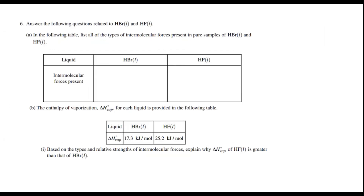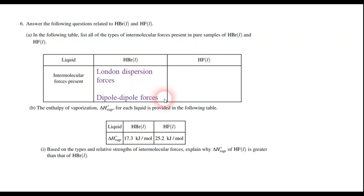Question 6 starts out by asking us about intermolecular forces, specifically HBr and HF. For HBr, you need to realize that it has London dispersion forces — mainly because everything has London dispersion forces — but it also has dipole-dipole forces, because HBr is a polar molecule. If it's a polar molecule, it's going to have dipole-dipole forces holding it together.